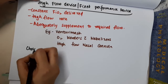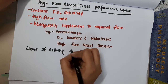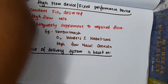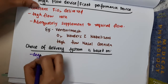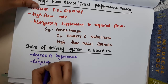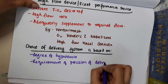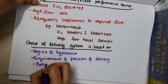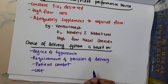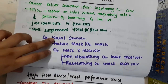The choice of delivery system — whether low flow or high flow — is mainly based on three things: one, degree of hypoxemia; two, requirement of precision of delivery; and three, patient comfort and cost.